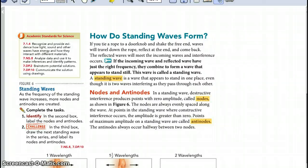How do standing waves form? If you tie a rope to a doorknob and shake the free end, waves will travel down the rope, reflect at the end and come back. The reflected wave will meet the incoming waves and interference occurs. If the incoming wave and reflected wave have just the right frequency, they combine to form a wave that appears to be standing still. This wave is called a standing wave. A standing wave is a wave that appears to stand in one place even though it is two waves interfering as they pass through each other.